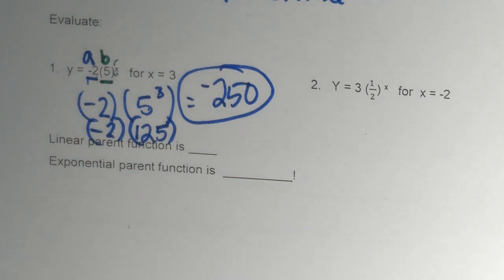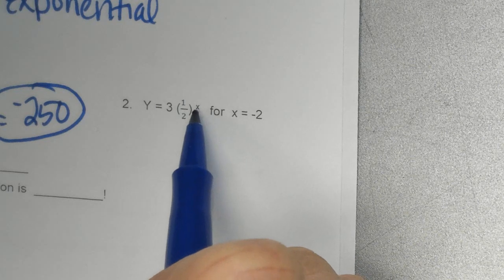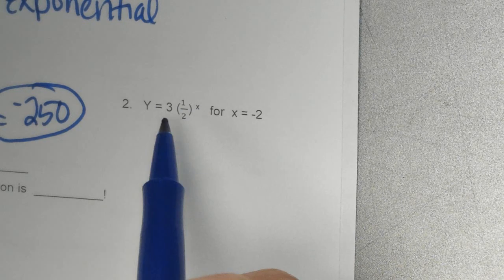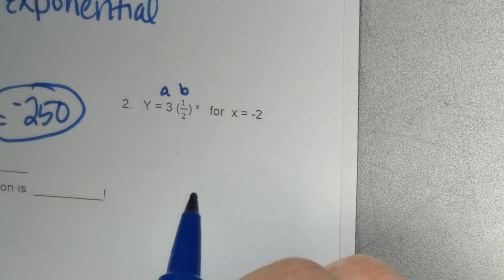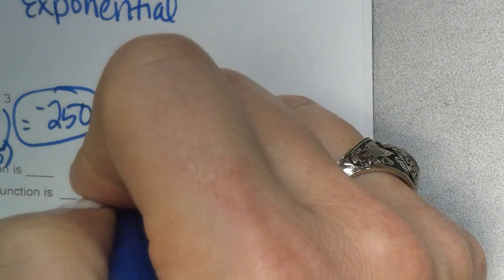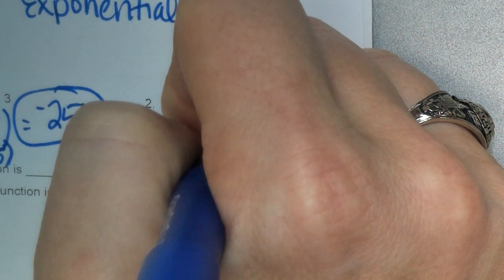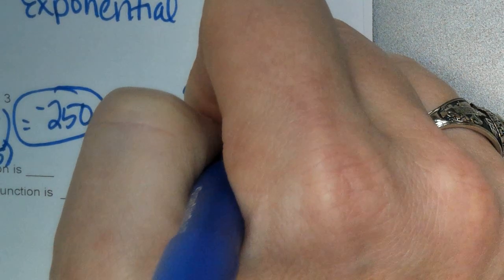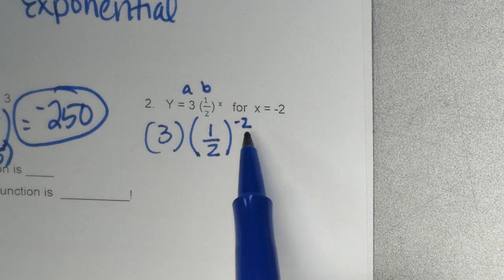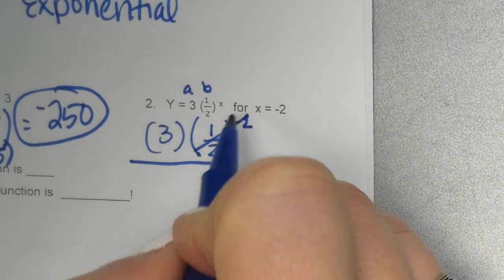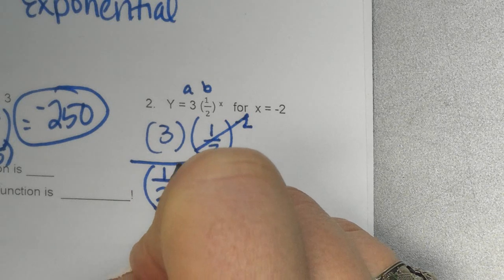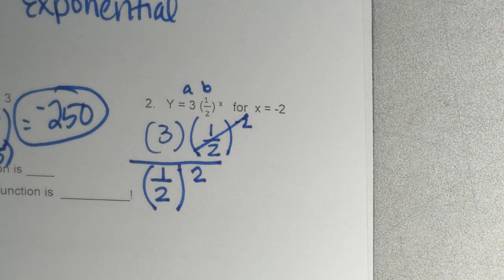Let's do this one over here. Y equals, we still have it in the ABX form. So three is our a, one-half is our b, and they tell us our X is negative two. So let's see if we can solve that. Three times one-half to the X power, which is negative two. All right, what do we do when there's a negative exponent? We put it on the bottom. We send it to the bottom, and it becomes positive.